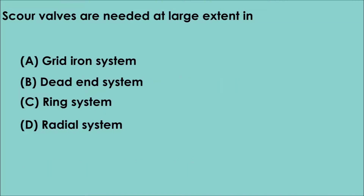Question 4. Scouring walls are needed to a large extent in: A. Grid-iron system. B. Dead-end system. C. Ring system. D. Radial system. The correct answer is option B. Scouring walls are needed to a large extent in the Dead-end system.